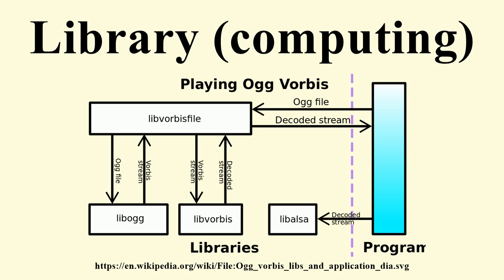A shared library or shared object is a file that is intended to be shared by executable files and further shared object files. Modules used by a program are loaded from individual shared objects into memory at load time or run time, rather than being copied by a linker when it creates a single monolithic executable file for the program. Shared libraries can be statically linked, meaning that references to the library modules are resolved and the modules are allocated memory when the executable file is created. But often linking of shared libraries is postponed until they are loaded.